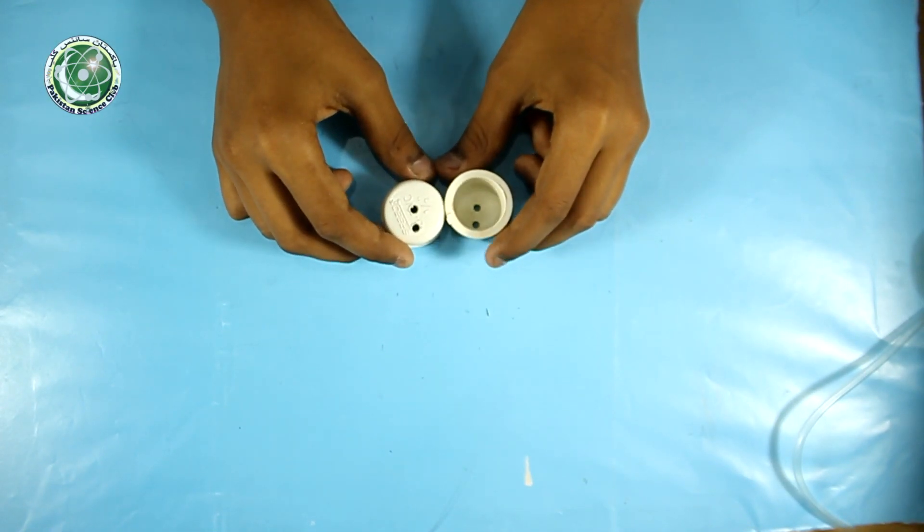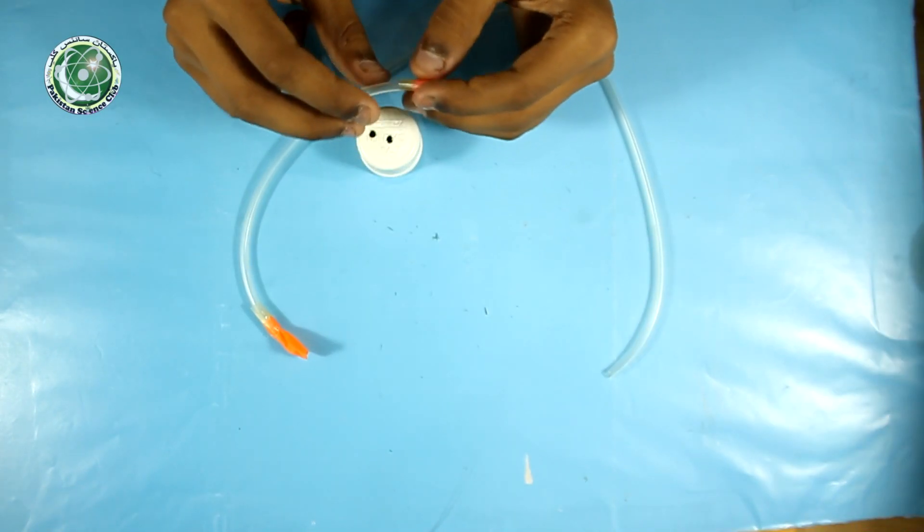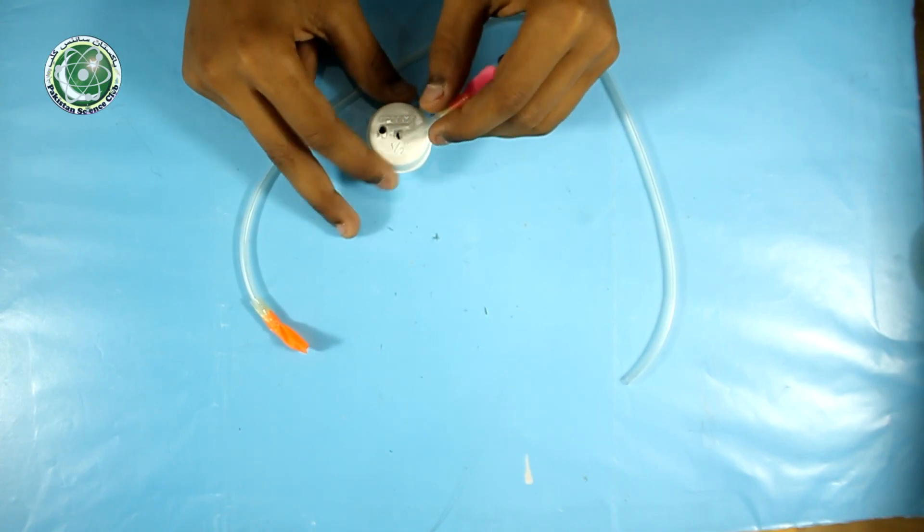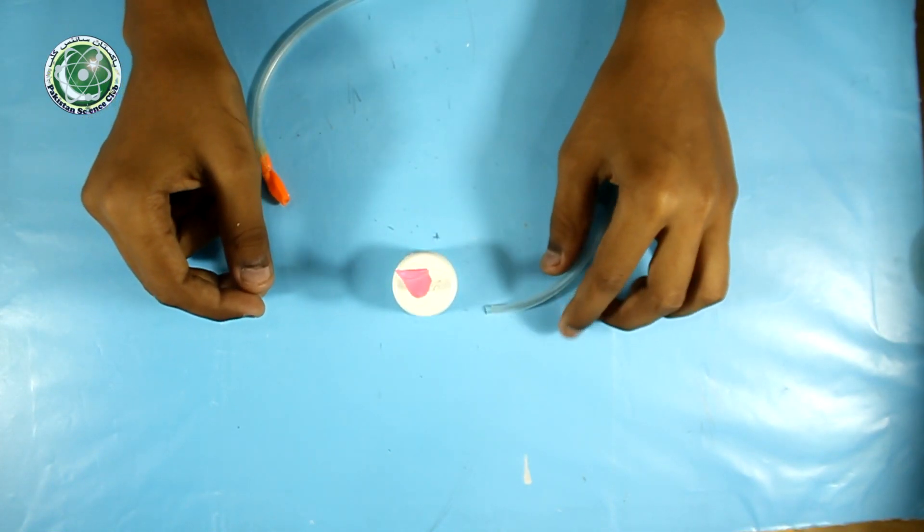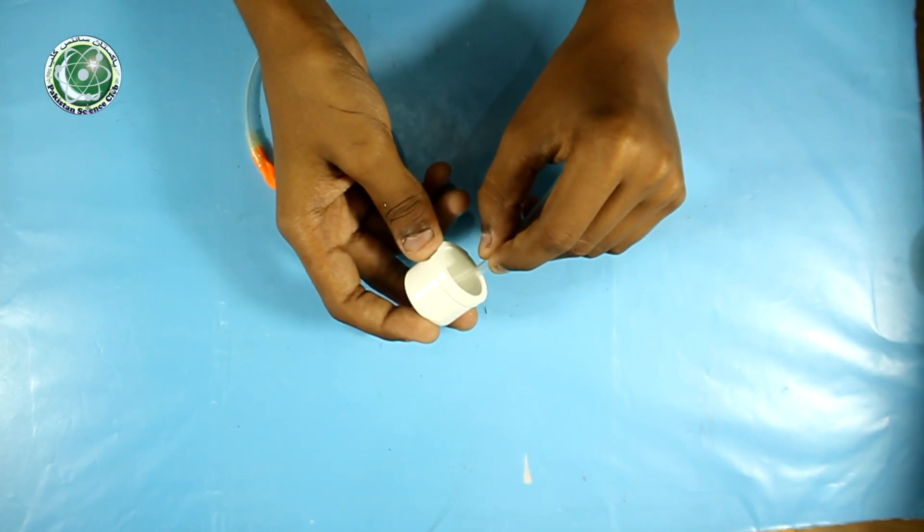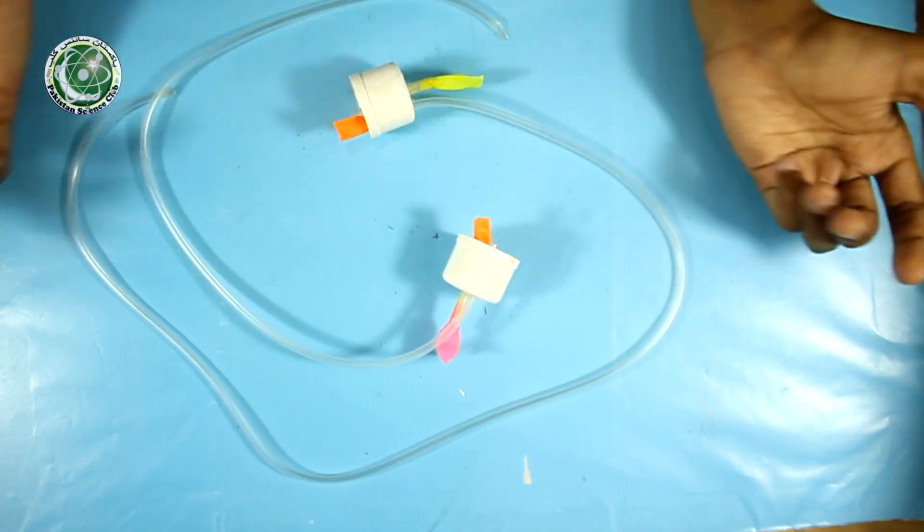I have made two holes in the caps, one in the middle and the other on the side. Now I will take the small drip pipe and insert it from the top of the PVC cap. Now I will take the other pipe and insert it from inside the PVC cap and pull it out from outside. We will make two of them like this.